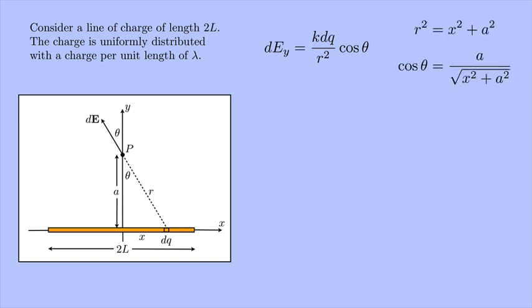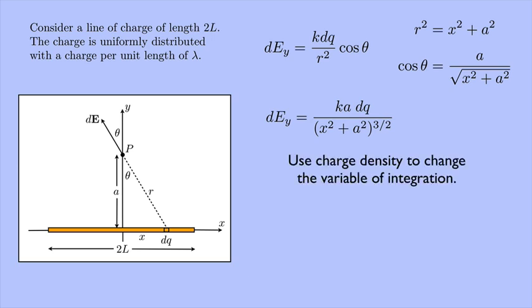Okay, so if I do that, I get dEy equals k a dq over (x² + a²)^(3/2). That's because I have r² times r, and r is written as a square root. Now I can use charge density to change the variable of integration. Right now I have dq. It would be better if I could integrate, say, with dx.